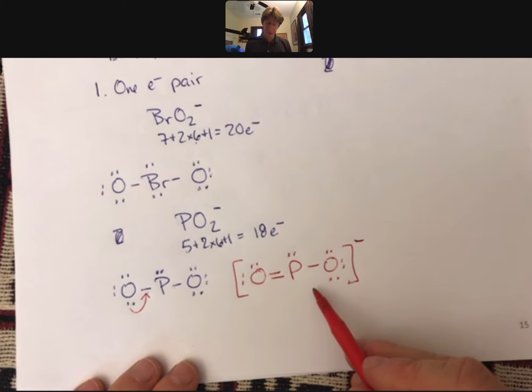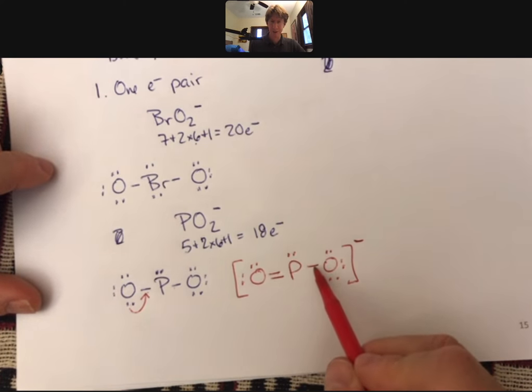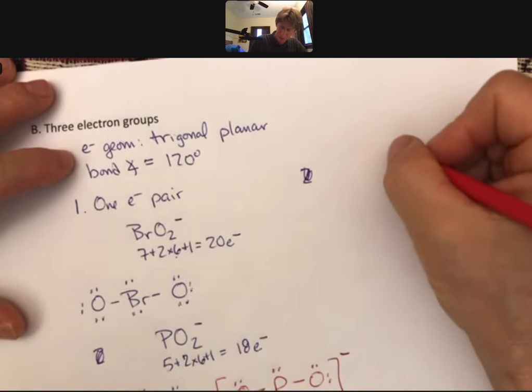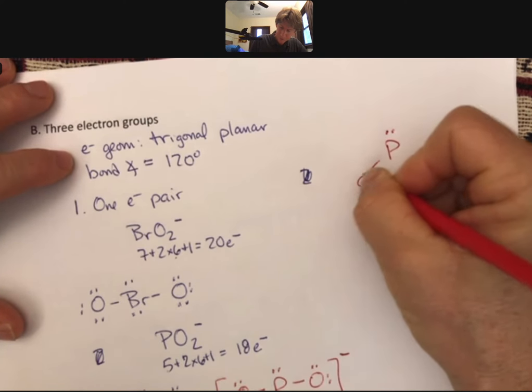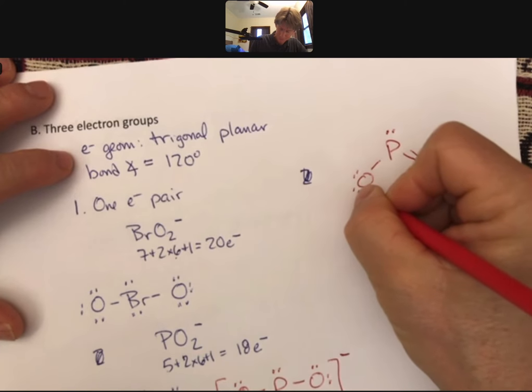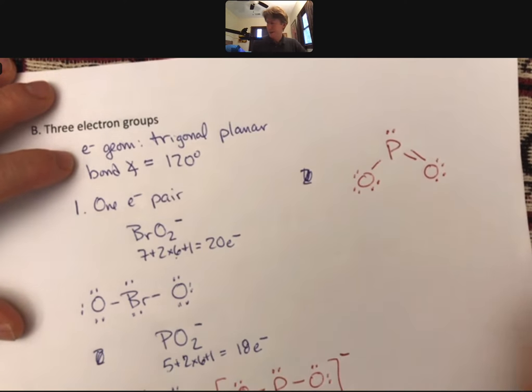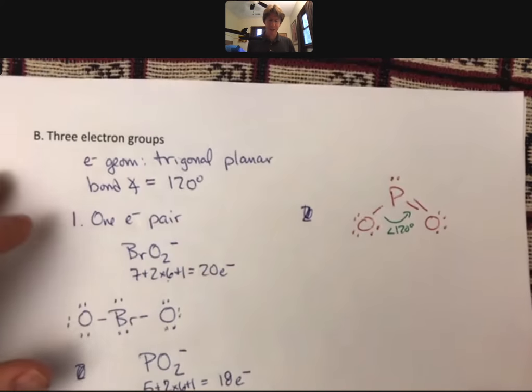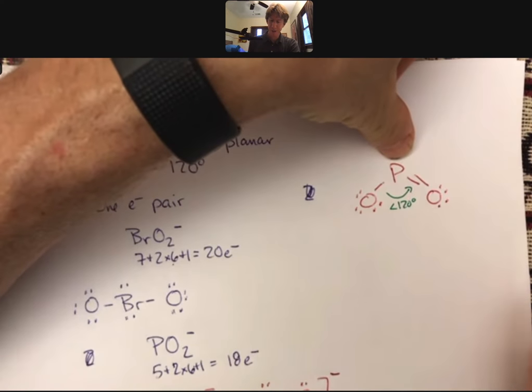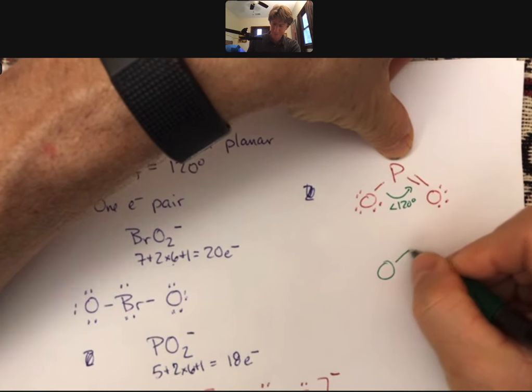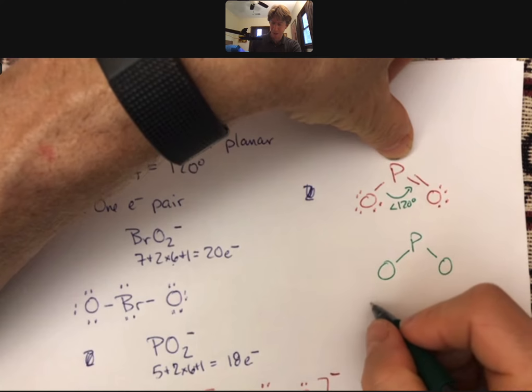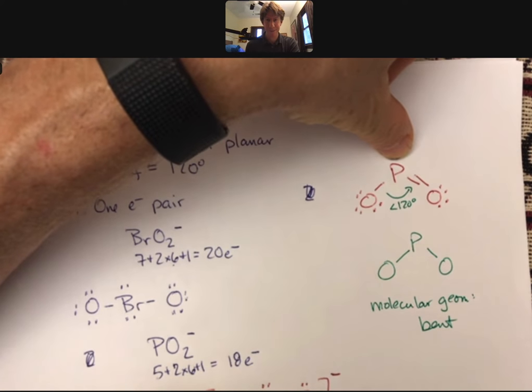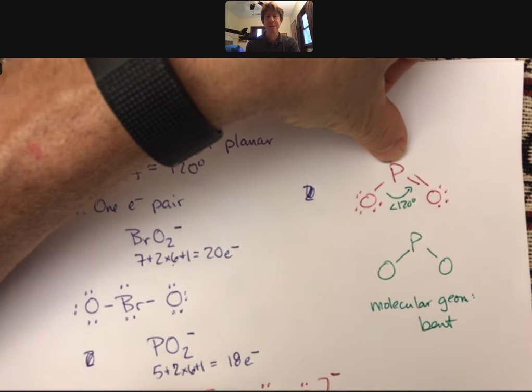And for this particular one, I have 1, 2, 3 electron groups. One is a pair of electrons, and so therefore, my shape, when I draw it, is going to be P. I switched my single and my double bonds again. And our analysis goes like this, this bond angle is less than 120 degrees. Here's the part we've been waiting for. Cover up the pair of electrons, only look at the atoms, and you get a shape that's called a molecular geometry, a molecular geometry that's called bent because it looks like a bent molecule.